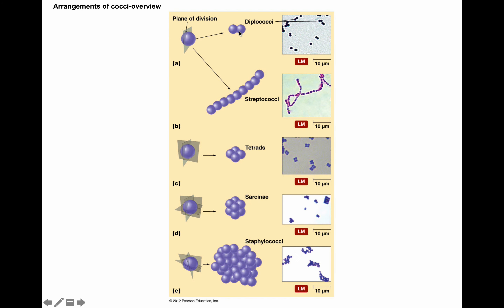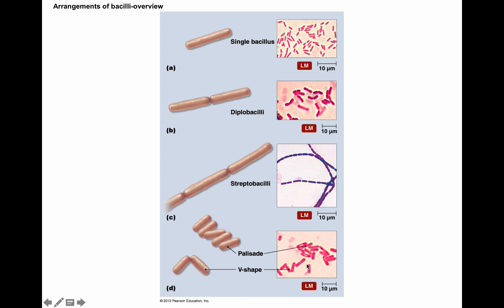Arrangements for coccus-shaped cells include: diplococcus, which are pairs; streptococcus, which are chains; tetrads, which are groups of four; and staphylo, which are clumps. For bacillus arrangements, there is single bacillus — most common in lab — as well as diplobacilli, streptobacilli, and palisades or V-shapes, which have a stacking or clumping effect.